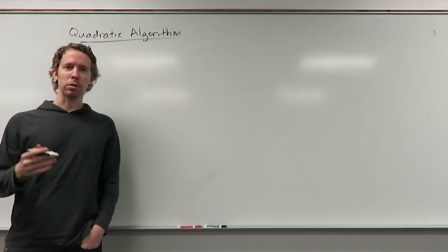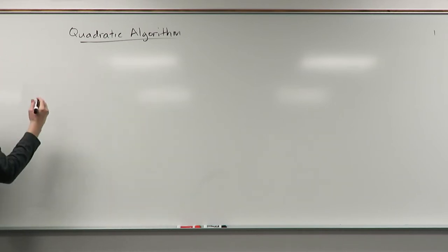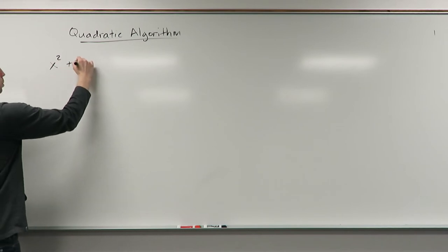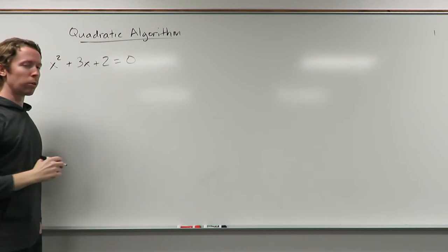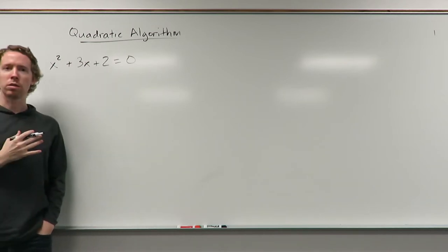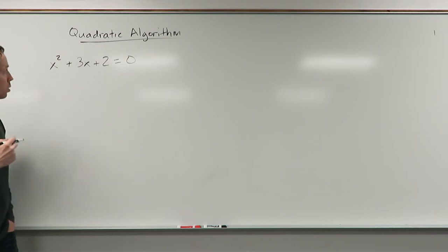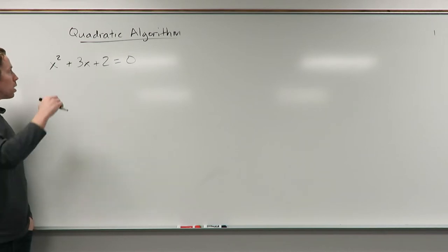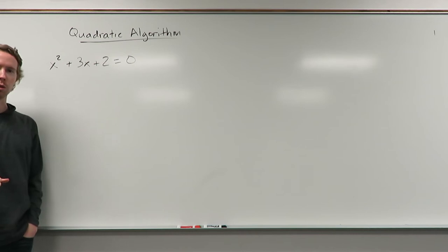I'll give you a simple quadratic equation that we can start out with. Let's say we have x squared plus 3x plus 2 equals 0. You may have already learned to solve this. The way that you can do this easiest is to use factoring. What we're trying to find is all the numbers that we can put in for x that make this equation true.